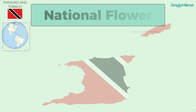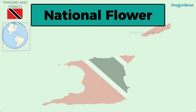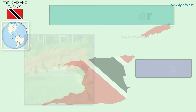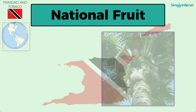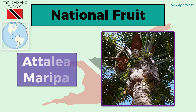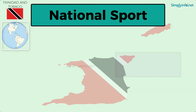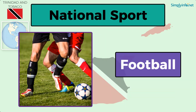National bird: Scarlet Ibis. National flower: Chaconia. National fruit: Atalia Maripa. National sport: Football.